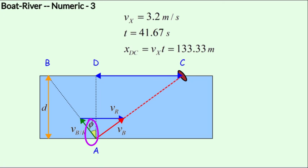If you increase or decrease phi and then recompute vx and t and the new drift, you will find that for all other angles of phi, the drift will exceed 133.33 meters.